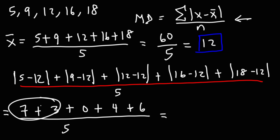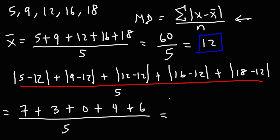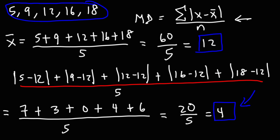7 plus 3 is 10, 4 plus 6 is 10, and 10 plus 10 is 20. And 20 divided by 5 is 4. So the mean absolute deviation for this set of numbers is 4.